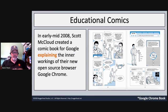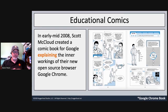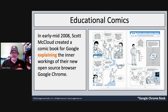Remember Scott McCloud? He wrote Understanding Comics in 1994, and then in 2008, Google asked him to create a graphic novel explaining the inner workings of the Chrome browser — what became the Google Chromebook comic. Interestingly, the artwork is just a blue-tone, duotone format. It has the same style as Understanding Comics, with a character talking to you in first person and explaining things as you go through. A digital version is still available.